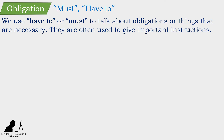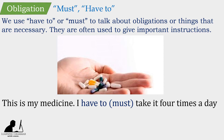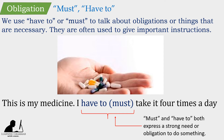We use 'have to' or 'must' to talk about obligations or things that are necessary. They are often used to give important instructions. For example: 'This is my medicine. I must take it four times a day.' Or: 'This is my medicine. I have to take it four times a day.' Must and have to both express a strong need or obligation to do something.